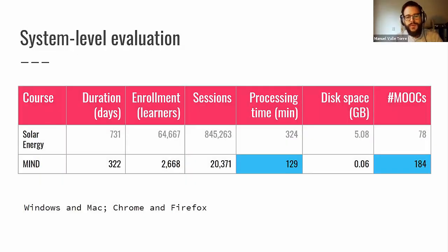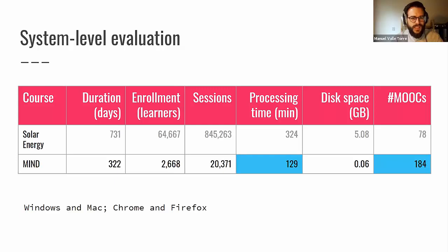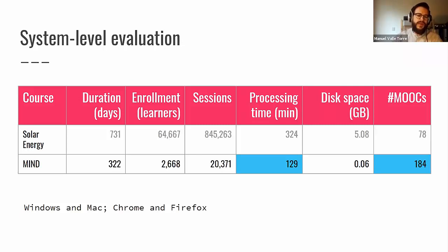Something else worth noting: the Mind of the Universe course is a much smaller course with only 2,000 students, but it also took around two hours of processing time. This is because there were 184 other courses running at the same time at TU Delft, so the files are really big no matter what — because all files have the information from all available courses.